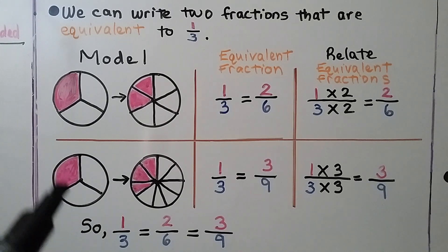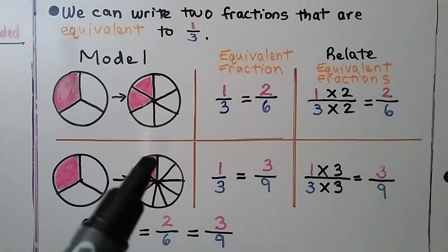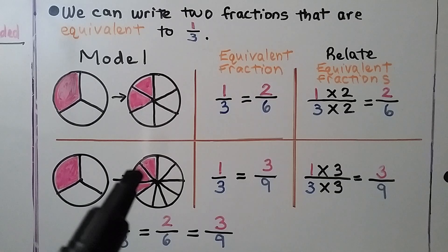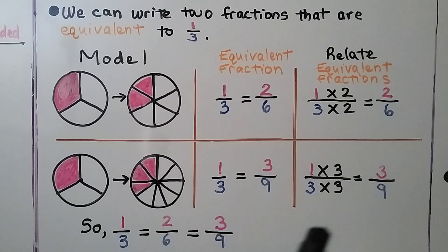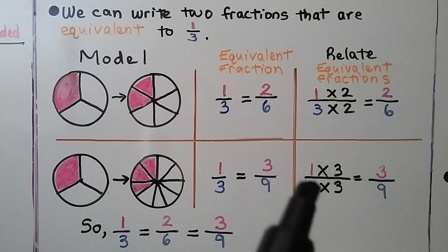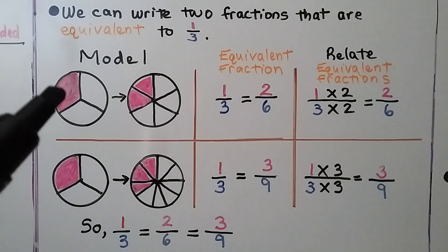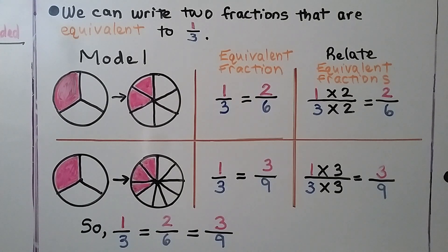Here we have one-third, and now we have nine parts and three are shaded. One-third is equal to three-ninths — these shaded parts take up the same amount of space. If we multiply both the numerator and denominator by three, we have one times three is three and three times three is nine. One-third is equal to three-ninths. So one-third equals two-sixths and also equals three-ninths.